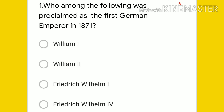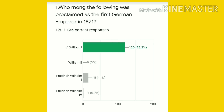Your options are: William First, William Second, Frederick William First, Frederick William Fourth. The right answer is William First, and 120 students have given the right answer.